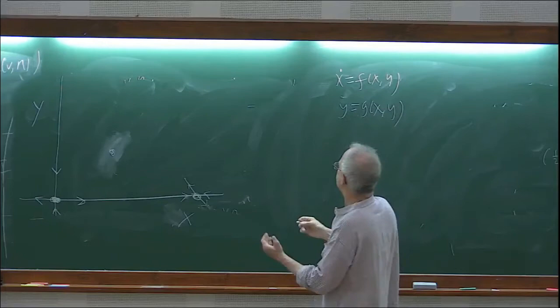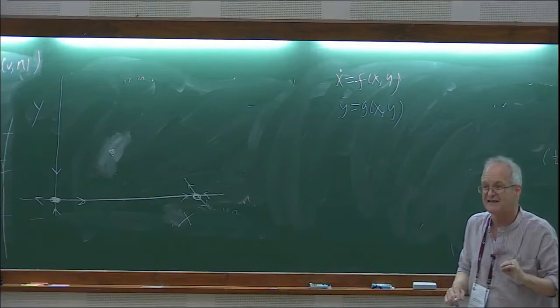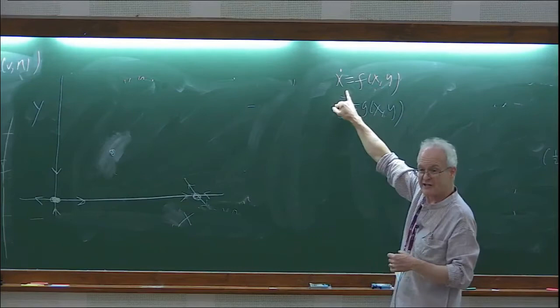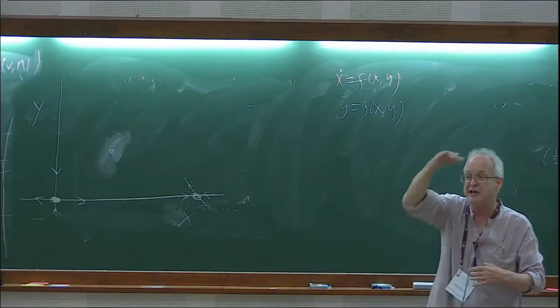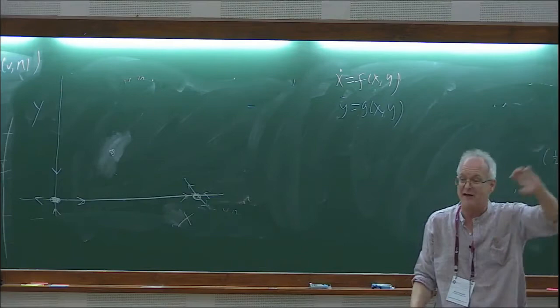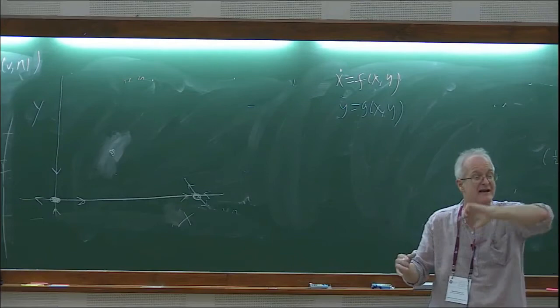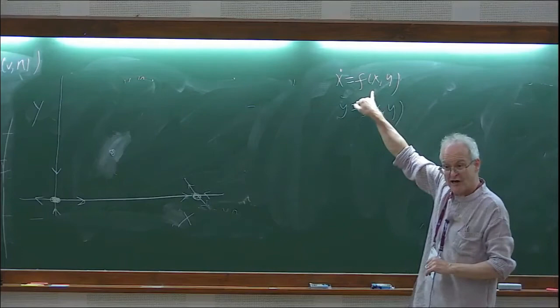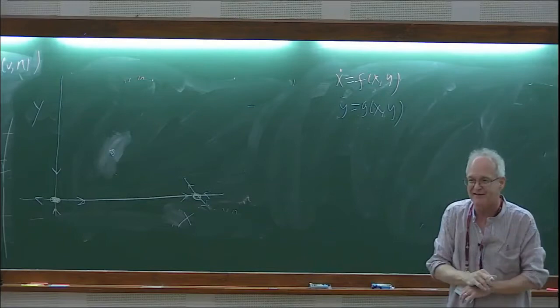If we pick a point (x, y) on the plane and evaluate f at that point and evaluate g, it tells us what direction dx/dt is and what direction dy/dt is. Those are tangents to the curves that fill out the plane. Remember from calculus: if you have a parametric curve x(t), y(t), then dx/dt and dy/dt give the tangent.